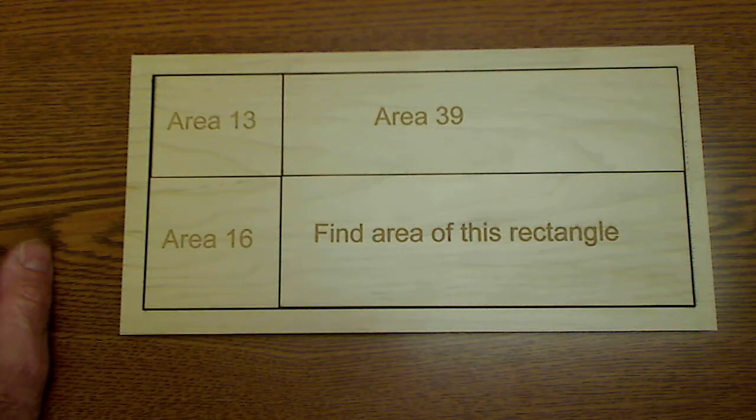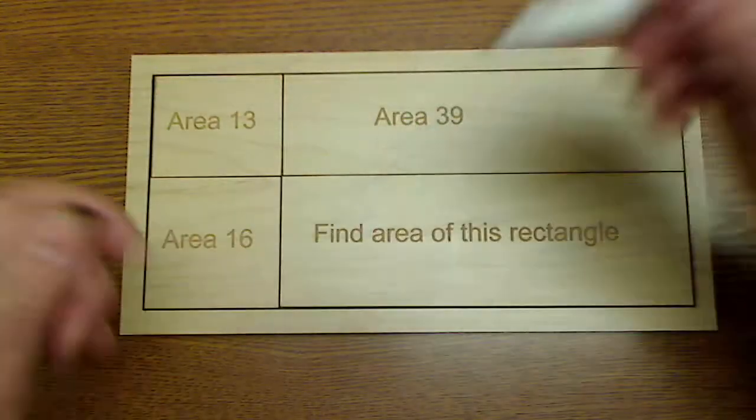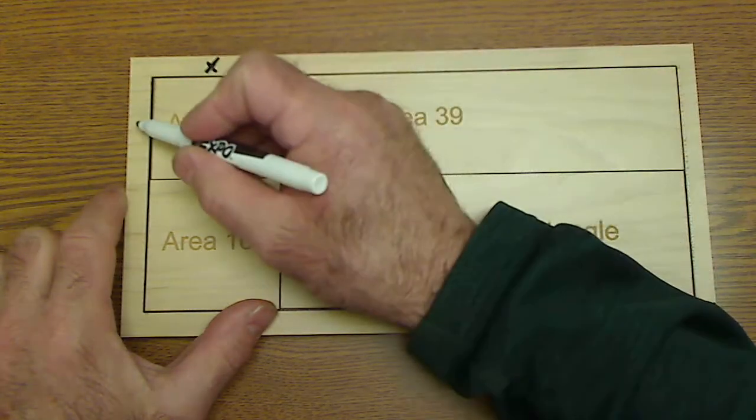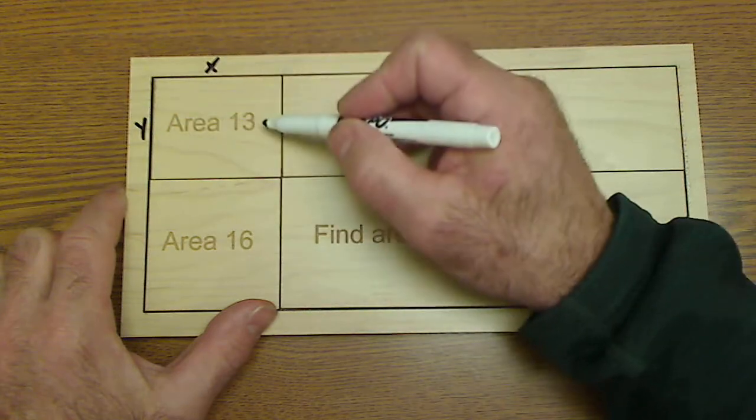Okay, so here's the solution. I have a whiteboard marker, I'm going to mark it up here. Let's say the area of this is x by y, so x times y equals 13.